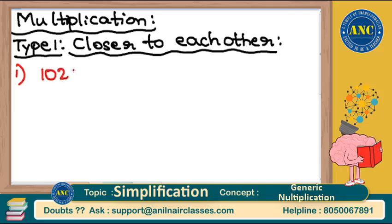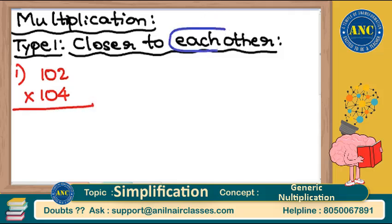Question number 1: 102 into 104. Step number 1 — 102 and 104 are closer to each other, and they are both also closer to 100. So I will take the base as 100.